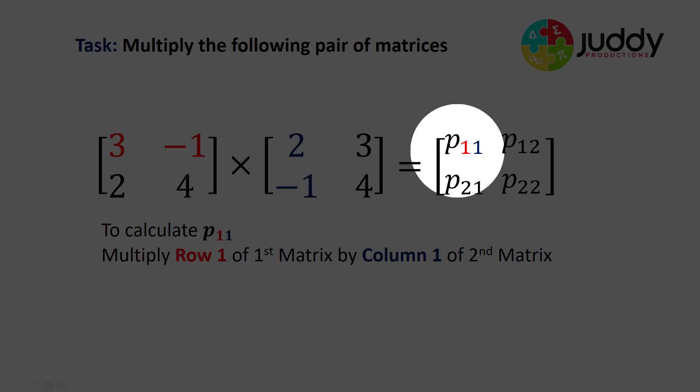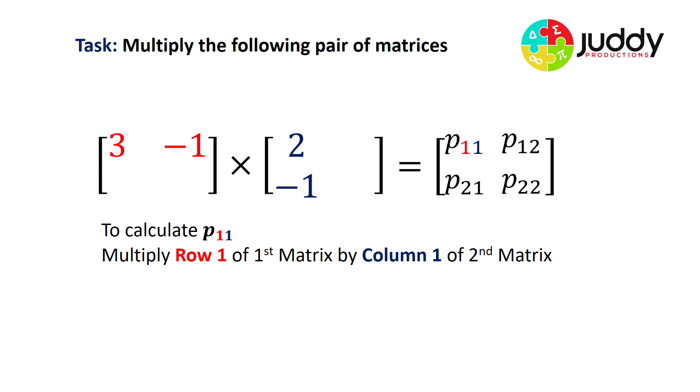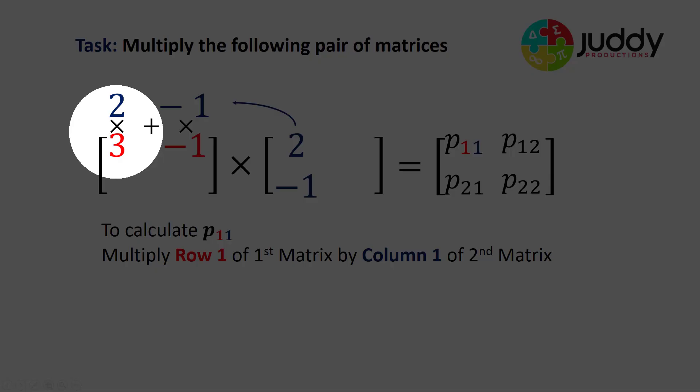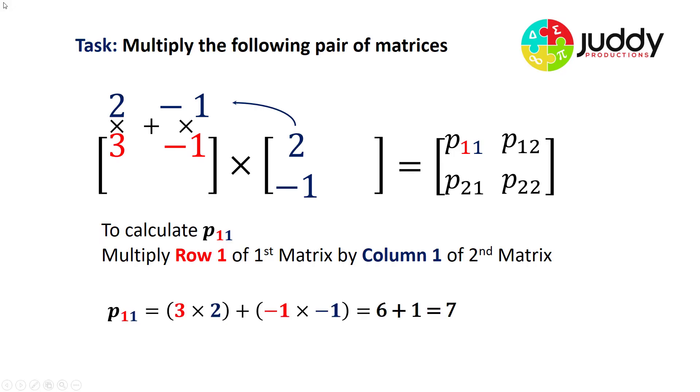So our first element, P11, uses row one of the first matrix and column one of the second matrix. We'll remove the other elements for simplicity. So we move column one of matrix two above row one of matrix one, and we multiply the values. So the two is multiplied by the three, and the minus one is multiplied by the minus one. And we add those products together. Three by two gives me six, plus minus one times minus one gives me one, gives me a value of seven. And that's entered into our matrix. So element P11 has a value of seven.